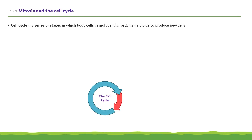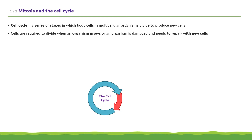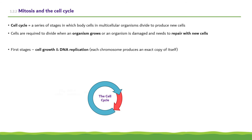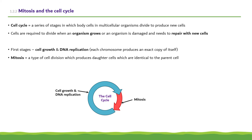Moving on to Mitosis in the Cell Cycle. The Cell Cycle is a series of stages in which body cells in multicellular organisms divide to produce new cells. Cells are required to divide when an organism grows, or an organism is damaged and needs to repair with new cells. The first stages of the cell cycle involve cell growth and DNA replication, with each chromosome producing an exact copy of itself. After this, mitosis occurs. Mitosis is a type of cell division which produces daughter cells which are identical to the parent cell. It results in two new cells, identical to the original cell, containing the same number of chromosomes.